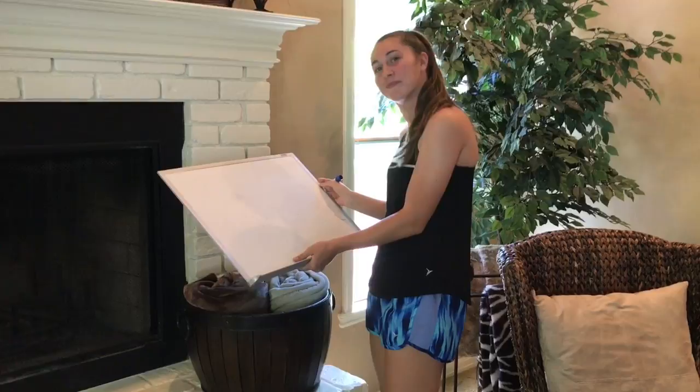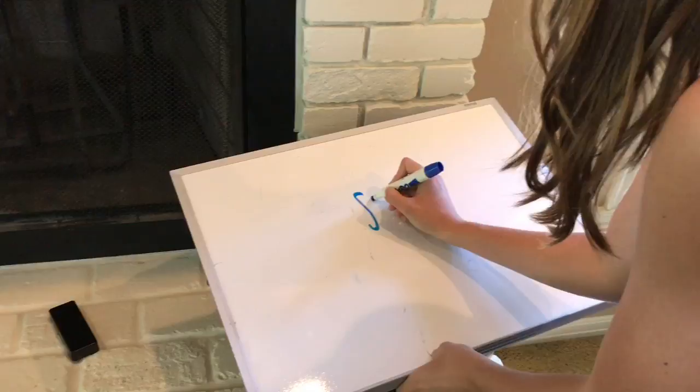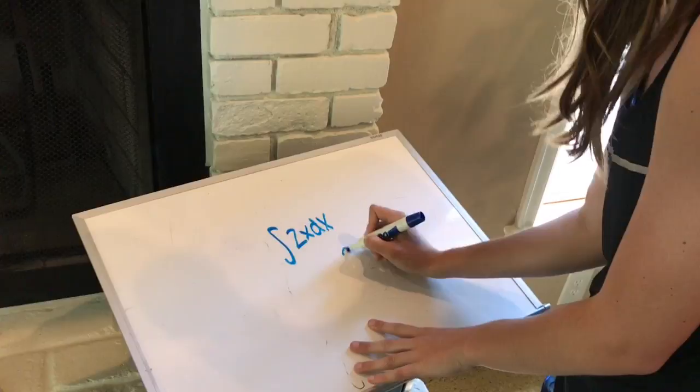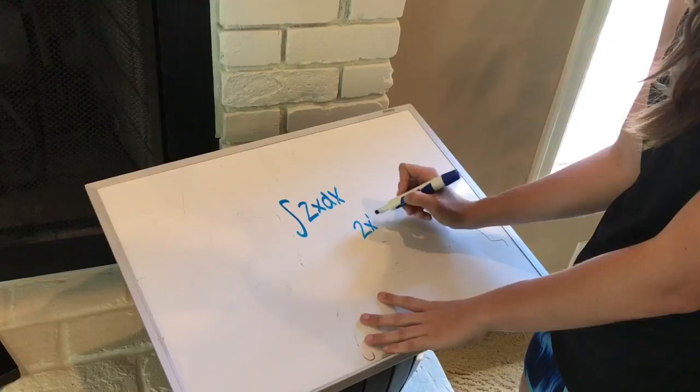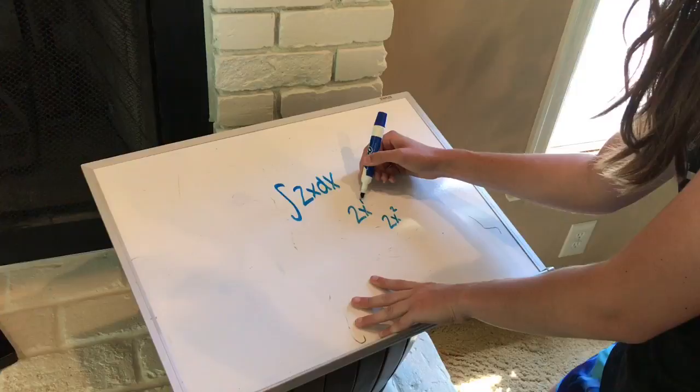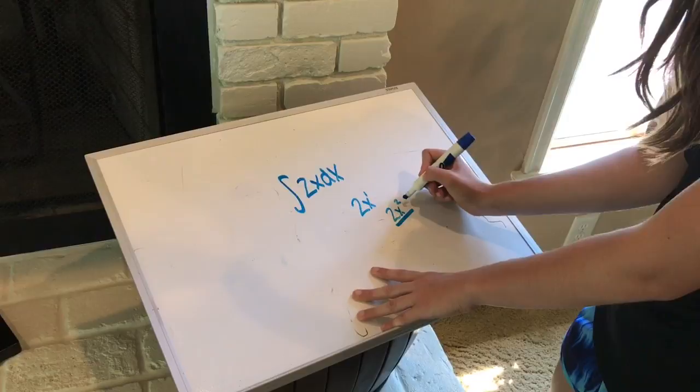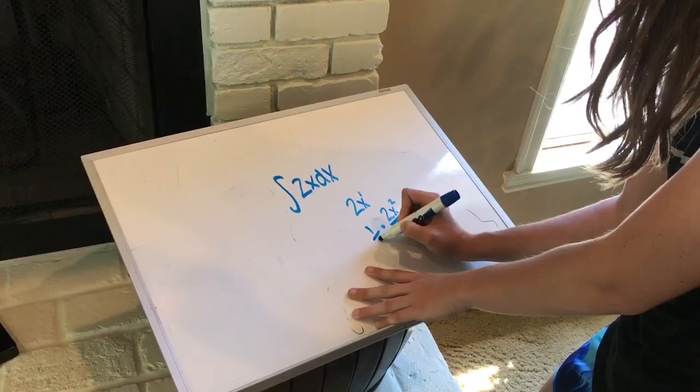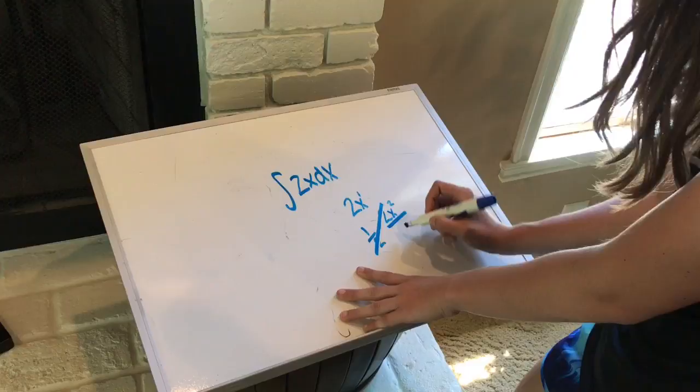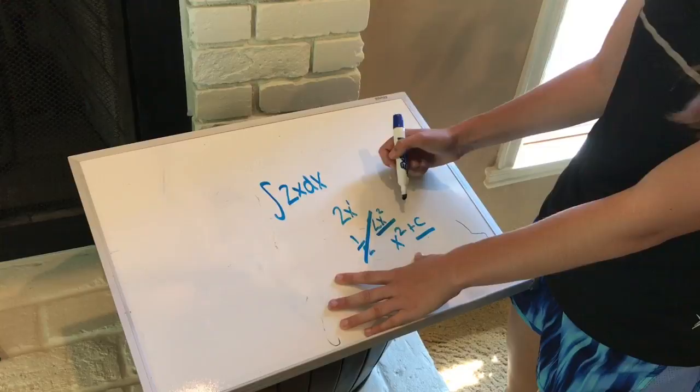So, this is how the setup for anti-derivatives are. So, what we want to do is we want to take 2x, and we want to raise the power of x by 1. So, it's already at 2x to the 1. So, we're going to raise it to 2x to the 2. So, add 1 to the power, and then we're going to multiply this by the reciprocal of the power we just raised it to. So, 2. So, we're going to multiply it by 1 half. We always have to have plus c when we're doing anti-derivatives because it's a constant. And we have to recognize that there could be a constant there, even though we don't know exactly what the constant is.